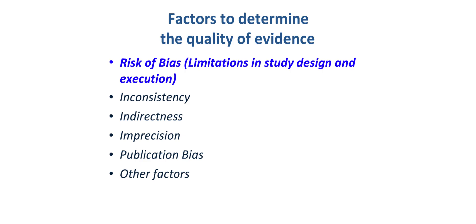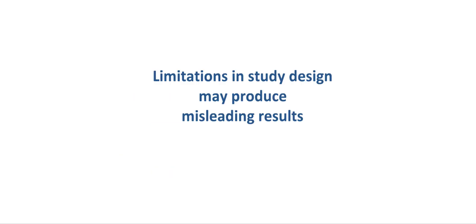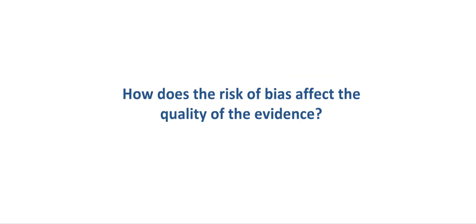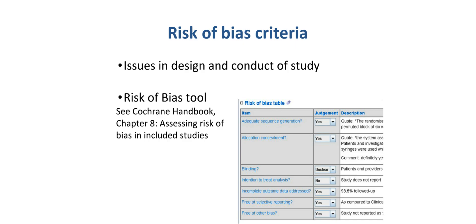We begin with the relation between GRADE and the risk of bias or limitations in study design and execution. Limitations in study design and execution or risk of bias may produce misleading or biased results. There are many issues in the design and conduct of a study that can lead to bias. The risk of bias tool in Cochrane systematic reviews is similar to assessing the limitations in study design and execution in the GRADE approach.